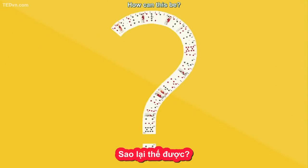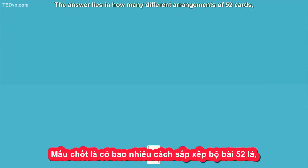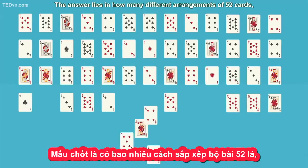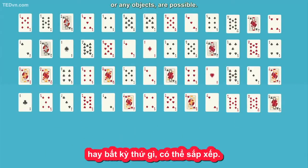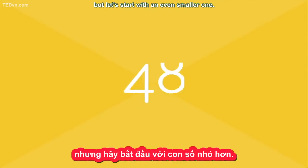How can this be? The answer lies in how many different arrangements of 52 cards, or any objects, are possible. Now, 52 may not seem like such a high number, but let's start with an even smaller one.